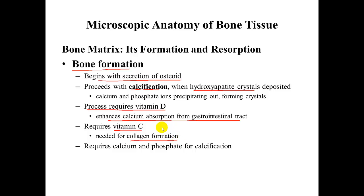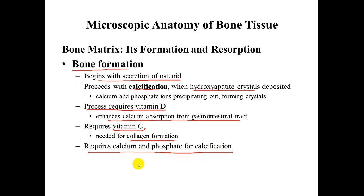If you are familiar with history, during the times of sailing from Europe to America, one of the problems sailors had was scurvy — they did not have enough vitamin C in their diet, which led to incorrect bone formation. Keep in mind that bone formation also requires calcium and phosphate for calcification; without those, it will not occur.